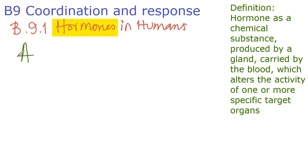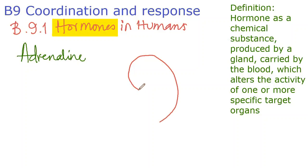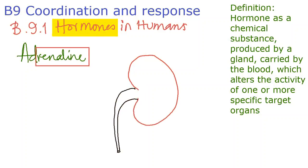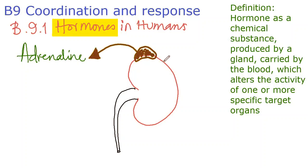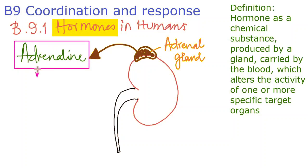One important hormone you need to know is adrenaline. The adrenal glands are attached to the upper end of the kidney — recall that the word 'renal' means kidney. These adrenal glands produce a hormone called adrenaline, which is secreted under special situations.